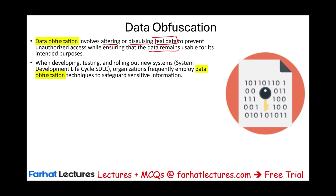This happens when we are developing new software in the system development lifecycle. When developing, testing, and rolling out a new system, organizations employ this data obfuscation technique to safeguard sensitive information. We want to use the data to test the system while designing, implementing, and testing the new system, but at the same time we want to hide the data — so we would use data obfuscation.